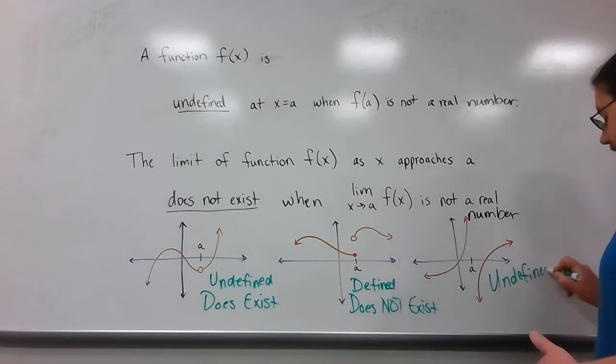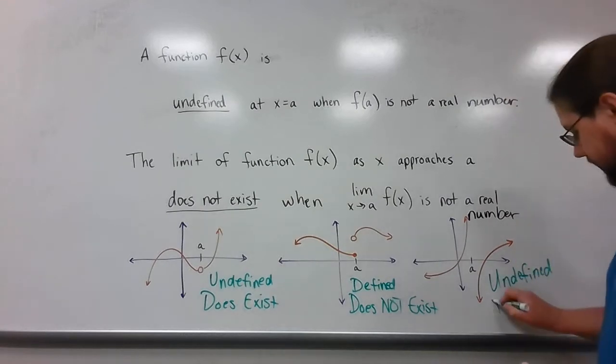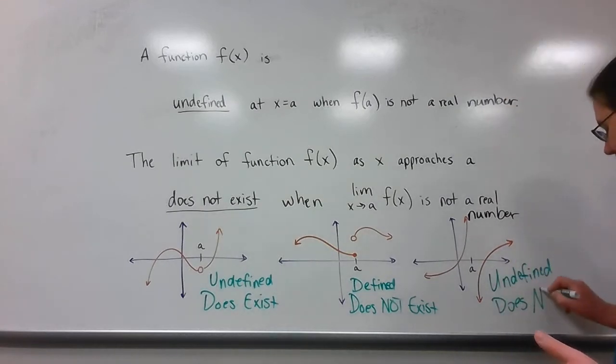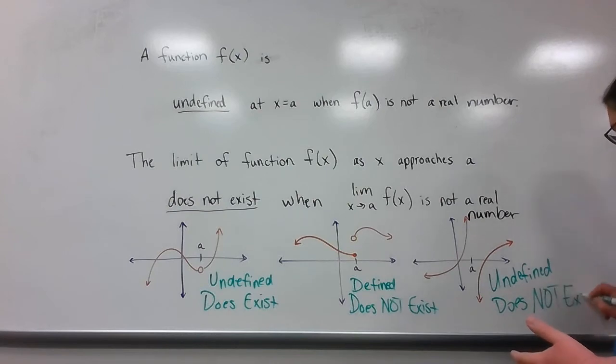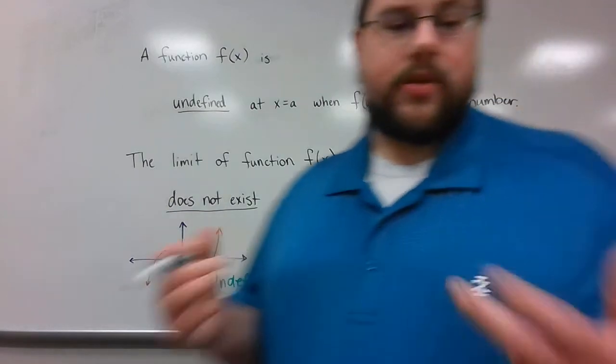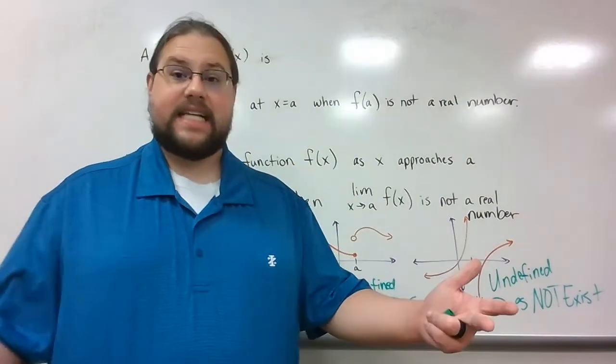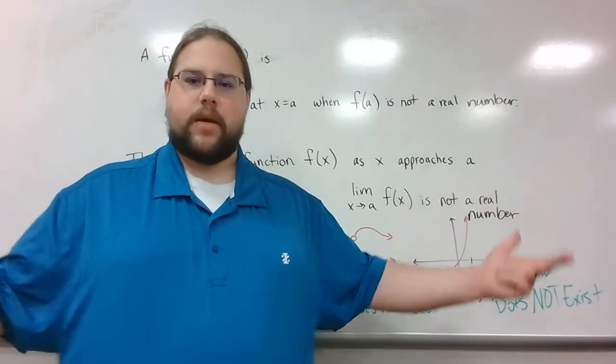And at the same time, the limit does not exist because it's going to positive infinity and negative infinity. They're not even going to the same place. So it's not going to exist for two reasons: infinity is not a number, and they don't go to the same place anyways.